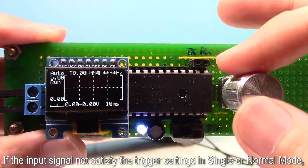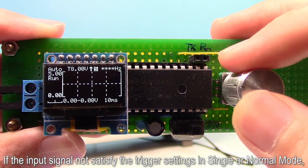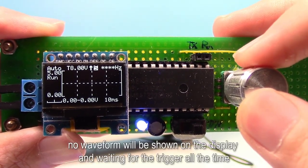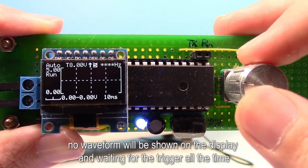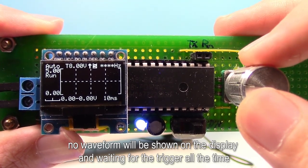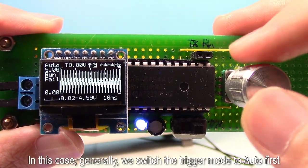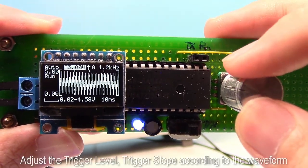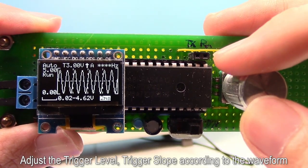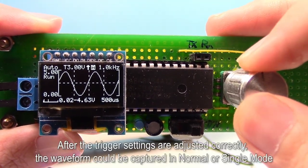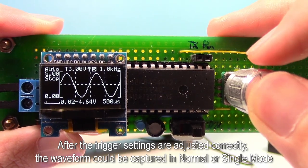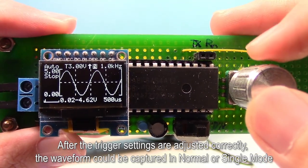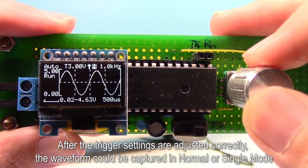If the input signal not satisfy the trigger settings in single or normal mode, no waveform will be shown on the display and waiting for the trigger all the time. In this case, generally we switch the trigger mode to auto first, adjust the trigger level and trigger slope according to the waveform. After the trigger settings adjusted correctly, the waveform could be captured in normal or single mode.